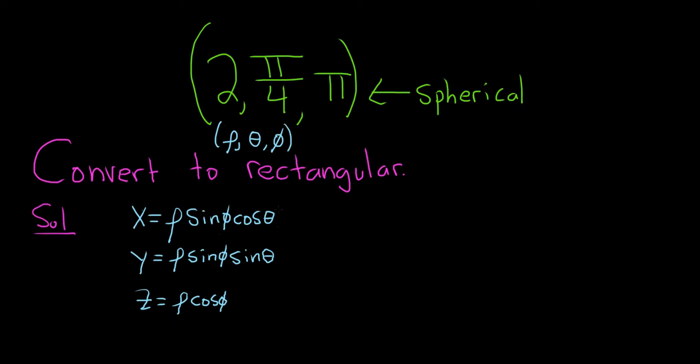So now all we have to do is plug in everything. x is equal to, so ρ is 2, sine of φ. So again, φ is π. Be really careful. The most common mistake in these problems is that people mix up the θ and the φ. I think it's because φ is the third component, and then it shows up first in the formula, so it's really sneaky. And then cosine of θ, which is π over 4.